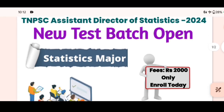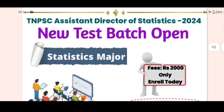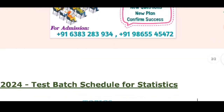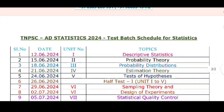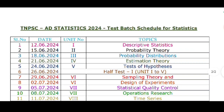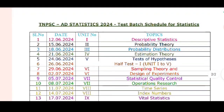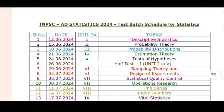A new pattern — we will open the test page for the Statistics Major. This is the schedule. In the TNPSC, in the AD Statistics Order, Test by Schedule 4, Statistics Major.